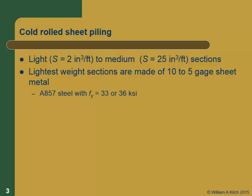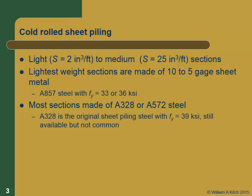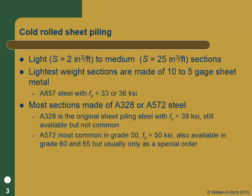The lightweight sections are usually A857, typically 36 KSI but can be 33 KSI — you need to check. Most sections are made out of A328 or A572. The A328 is the original one used for sheet piling with a 39 KSI yield strength; it's still in use but not at all common. Most sections now are A572, which is Grade 50 or 50 KSI yield strength. You can get it in 60 and 65 KSI, but that's not the standard produced. If you need those higher grades, you're probably just going to go to a hot rolled section.